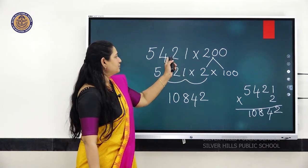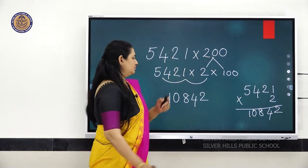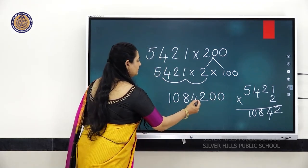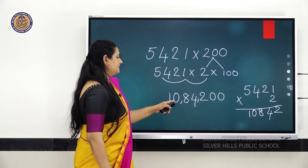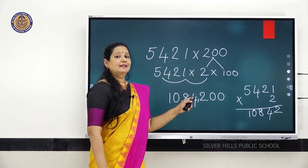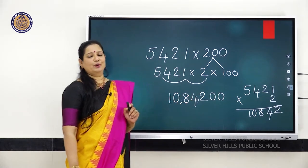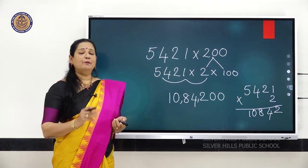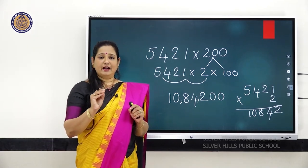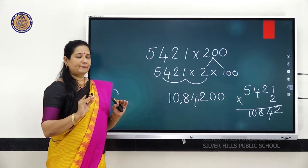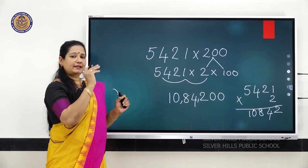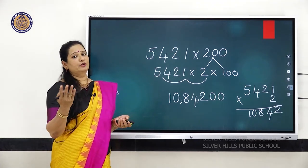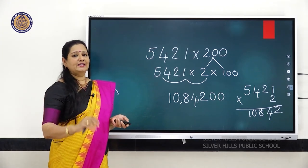But we have to multiply with 200, so you have to add 2 more zeros and put the comma. The answer will be 10,84,200. When multiplying with multiples of 100, first break that number, multiply with the whole number, and then add 2 zeros towards the right side.